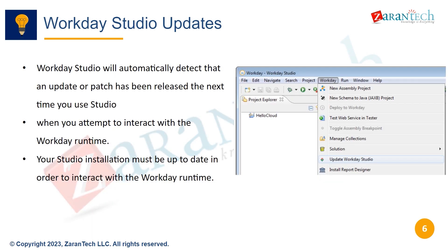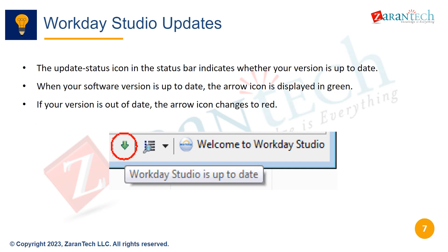Workday Studio will automatically detect when an update or patch has been released the next time you use Studio and attempt to interact with the Workday runtime. Your Studio installation must be up to date in order to properly interact with the Workday runtime. The update status icon in the status bar indicates whether your Workday Studio version is up to date. When your software version is current, the arrow icon displays in green. If your version is out of date, the arrow icon changes to red to notify you that an update is required.